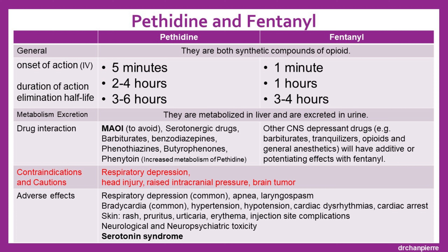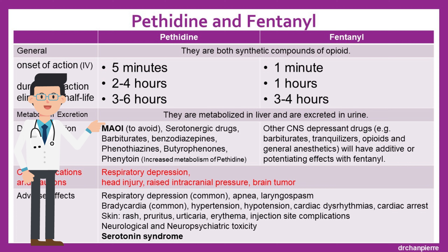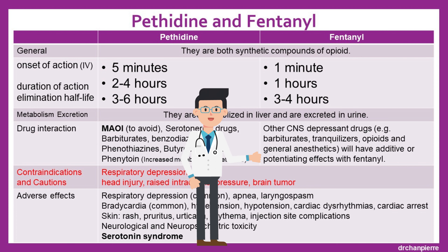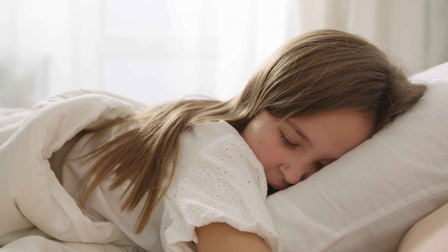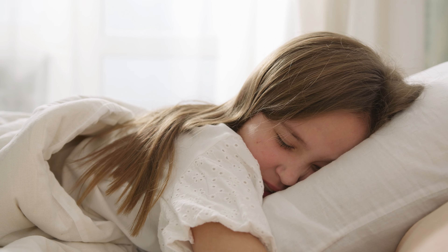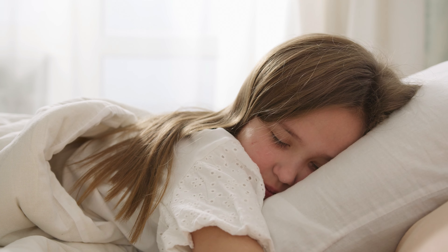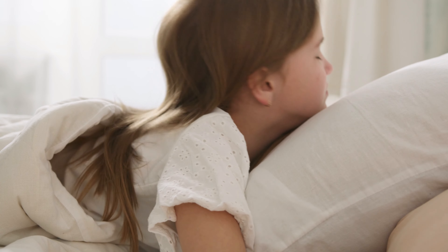Potential drug interactions with opioids should be kept in mind. Drug interactions with pethidine include MAOIs, serotonergic drugs, barbiturates, benzodiazepines, phenothiazines, phenytoin, etc. Drugs interacting with fentanyl include barbiturates, tranquilizers, opioids, general anesthetics, etc. When benzodiazepine is combined with an opioid, the two compounds have synergistic and additive effects with regard to sedation and side effect profile.